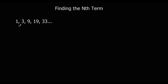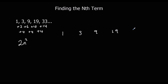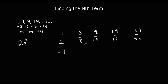Another example. This time the first differences go plus two, plus six, plus ten, plus fourteen, so the second difference is four. We half the second difference to get two, so this is a two n squared sequence. We write out two n squared: two times one squared is two, two times two squared is eight, two times three squared is eighteen, two times four squared is thirty-two, two times five squared is fifty. Now we subtract two n squared from the original sequence, which gives us minus one, minus five...